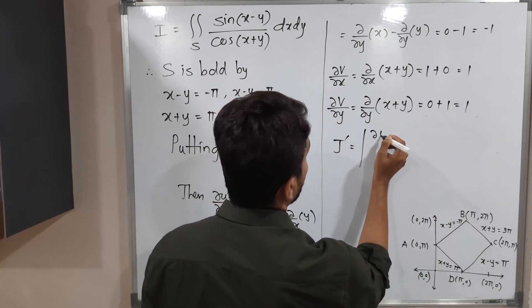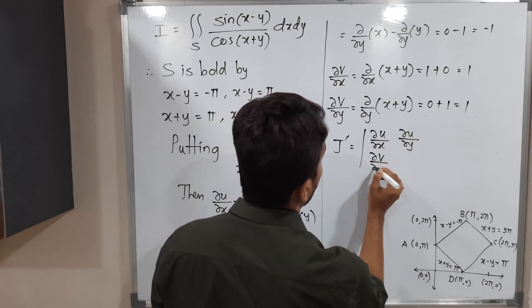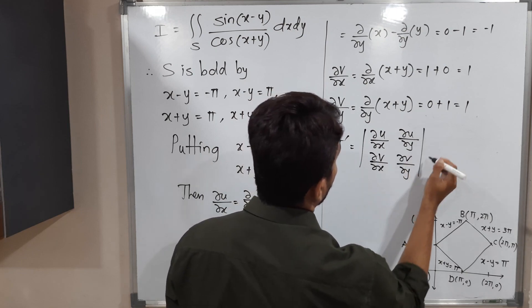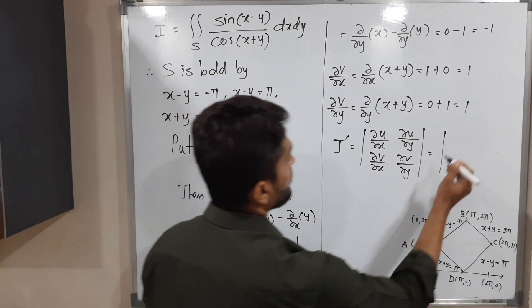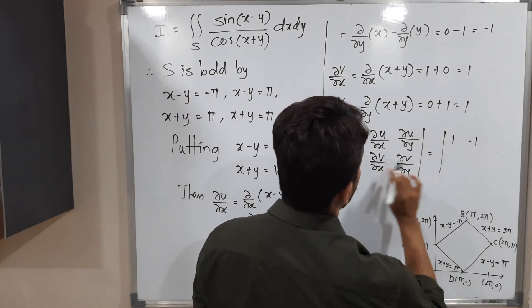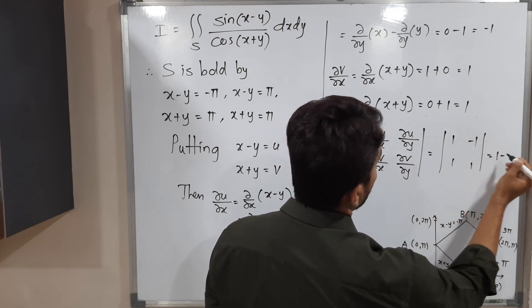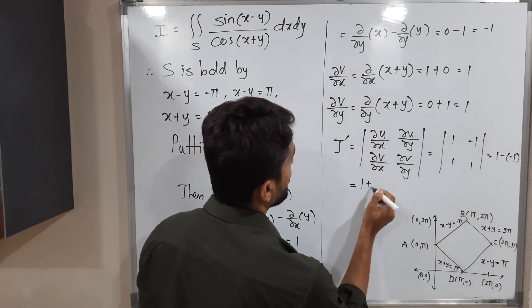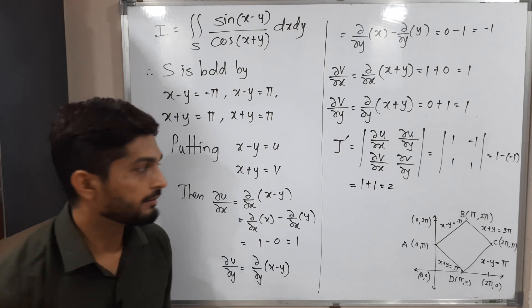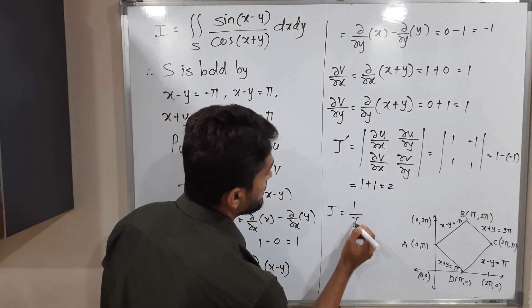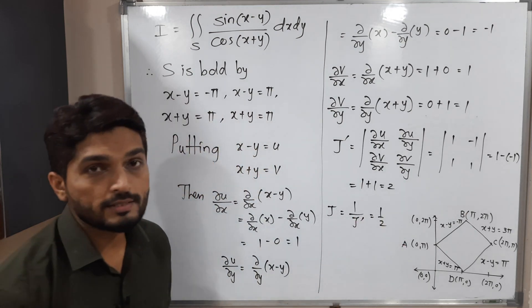So J-prime equals 2. Using the relation J equals 1 over J-prime, we get J equals 1 by 2. So finally we have the Jacobian.